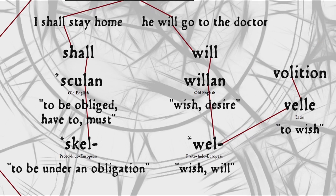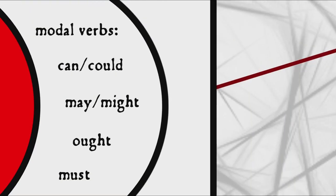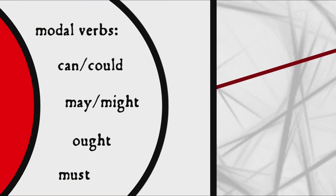Willan and shulan are part of a set of verbs called modal verbs, which express mood or modality — in simpler terms, elements of possibility, obligation, permission, ability, and so forth. Other modal verbs in modern English include can, could, may, might, ought, and so forth. They all sort of qualify the action of the main verb in some way.